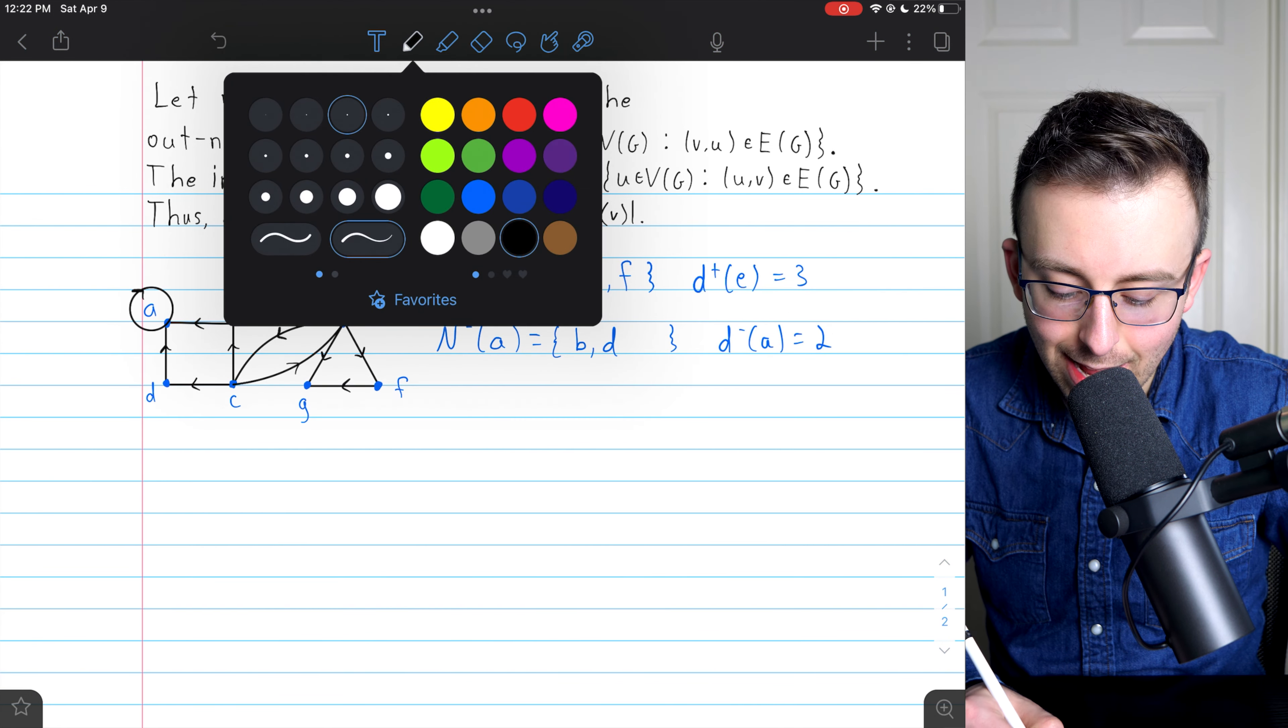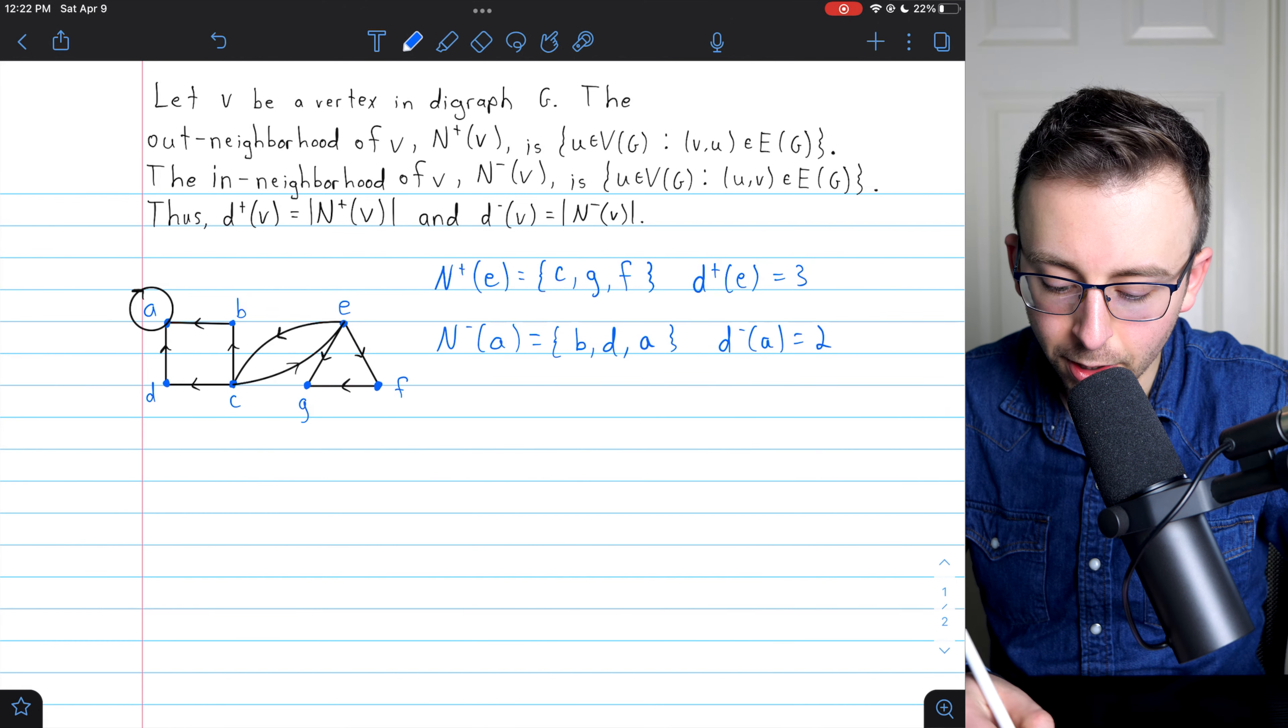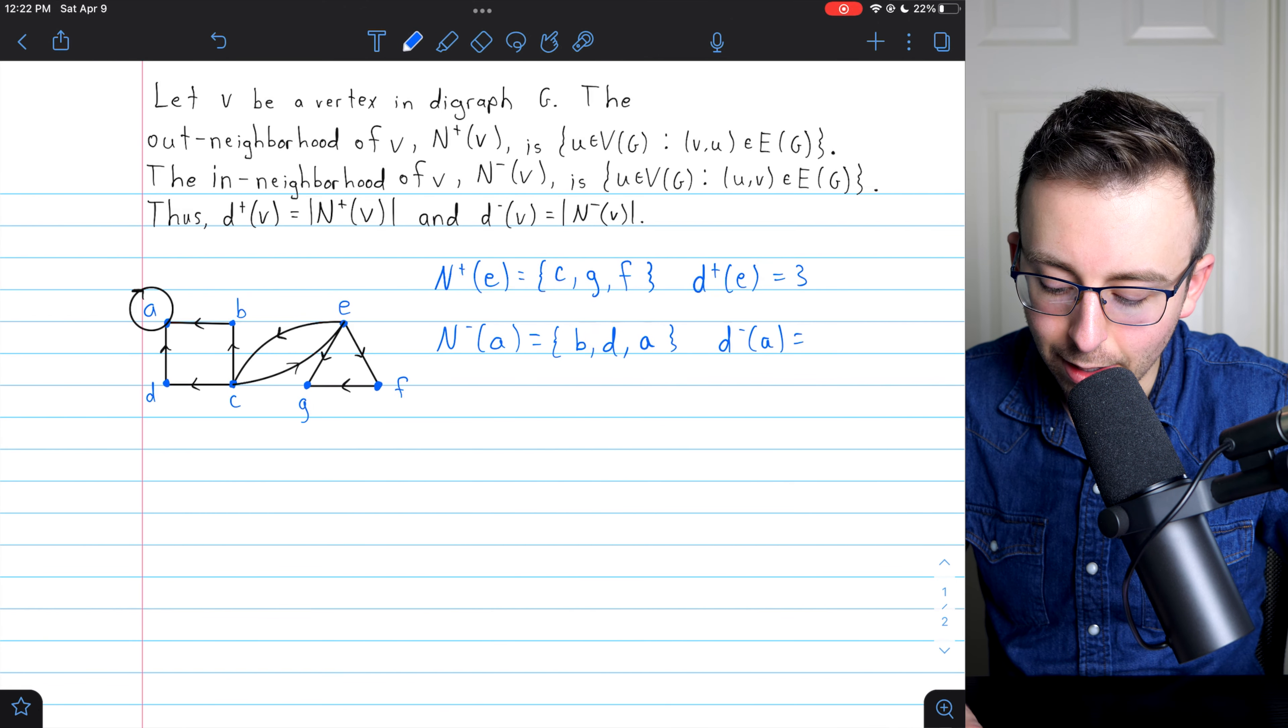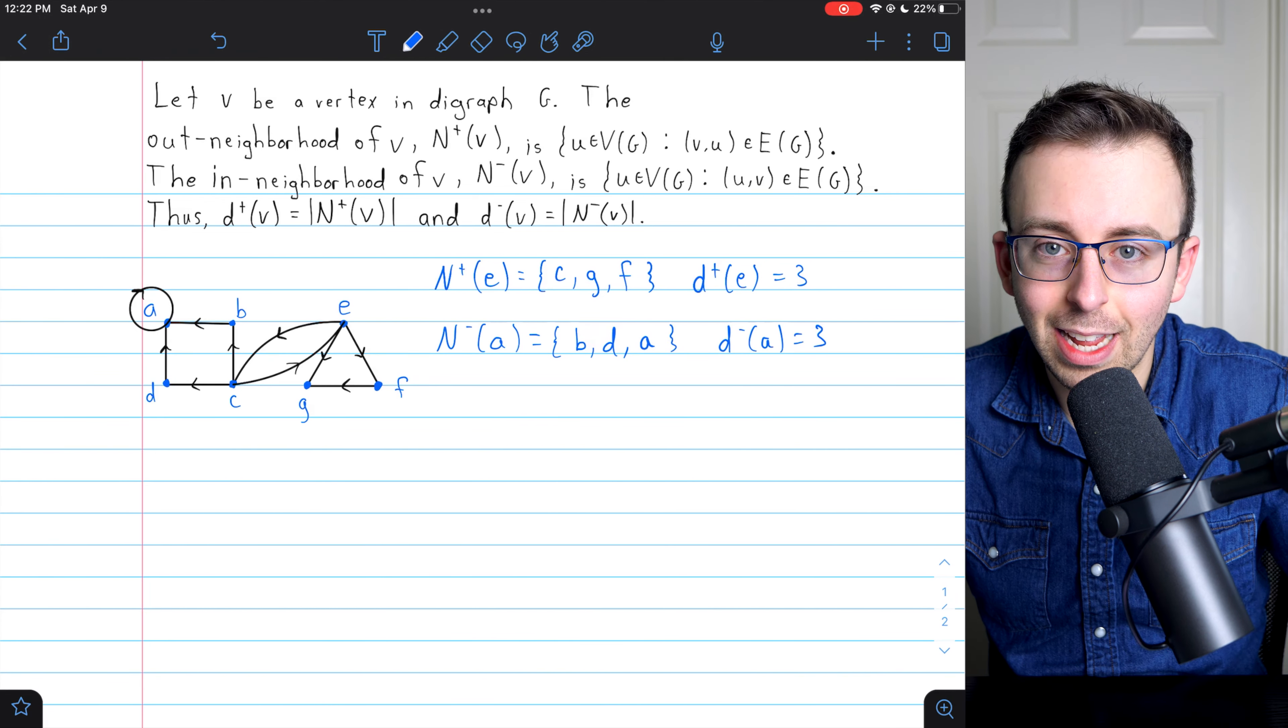So now A is also in its own in-neighborhood, and thus its in-degree now is three, since three vertices are going in to the vertex A.